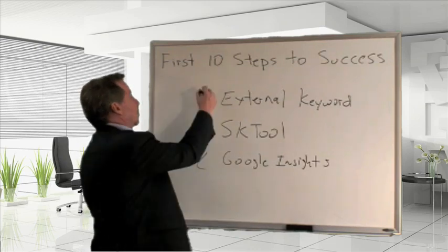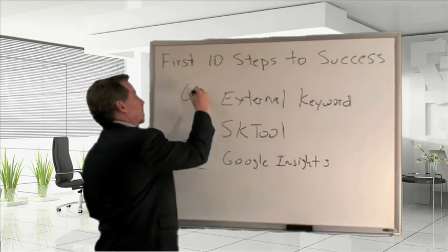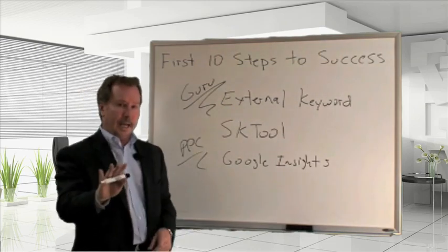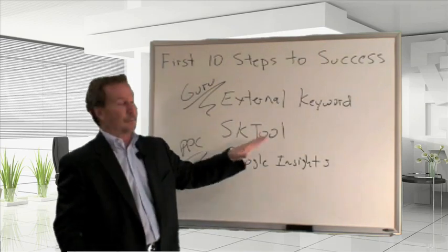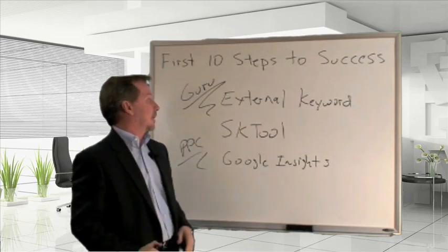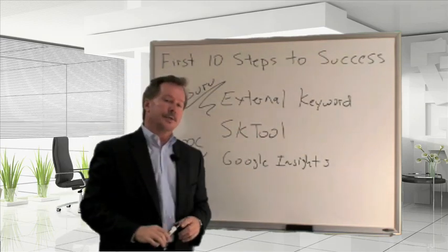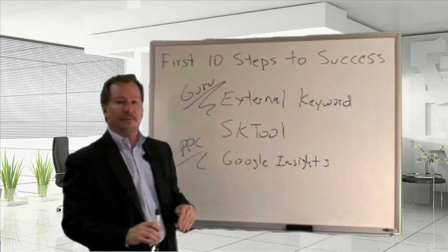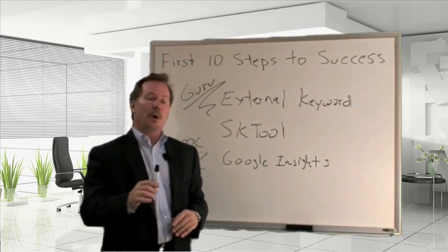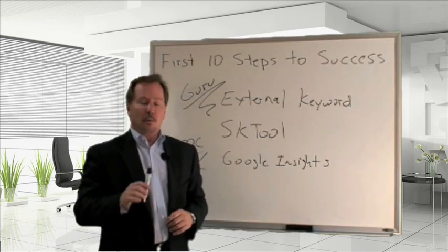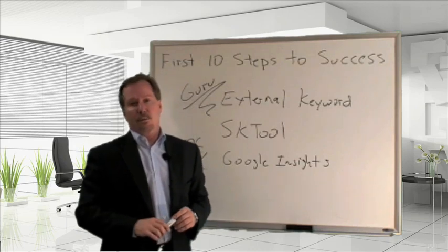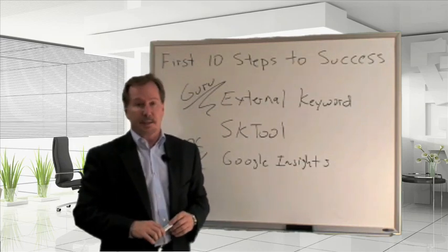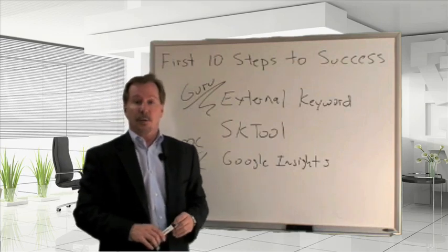The guru stage, which is the very first step, is extremely important. You can't skip this step — you must become a keyword guru before you go on to step two. Step two is analyzing the keywords you find for appropriateness for your website, their value, how much they'll cost to buy if you do paid ad spend, and how to optimize your site for those keywords.